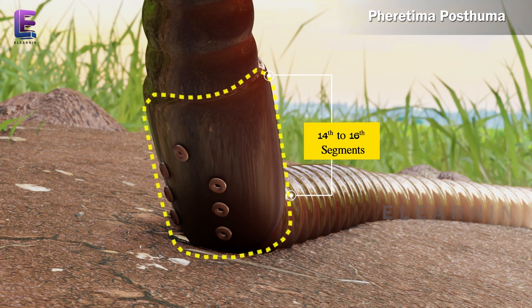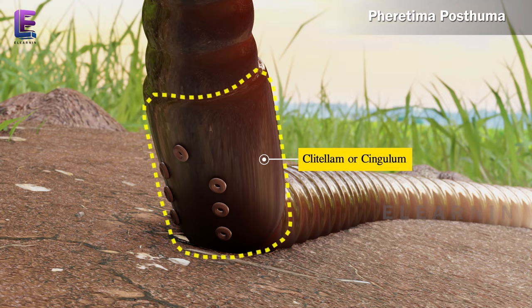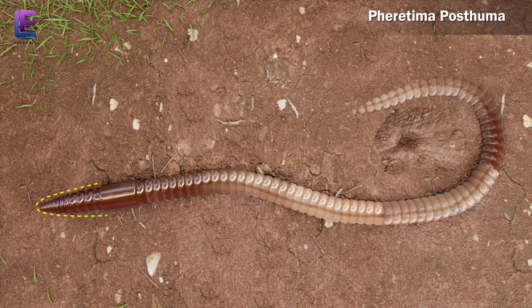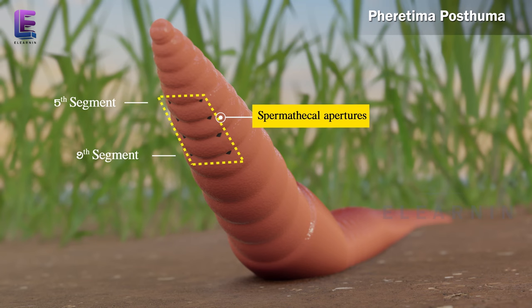In a mature worm, segments 14 to 16 are covered by a prominent dark band of glandular tissue called the clitellum or cingulum. The body is divisible into three prominent regions: preclitellar, clitellar, and postclitellar segments.